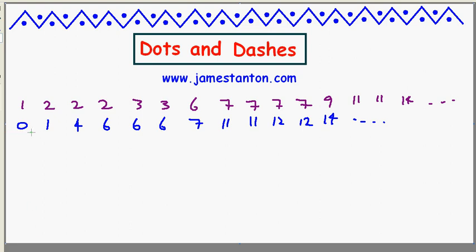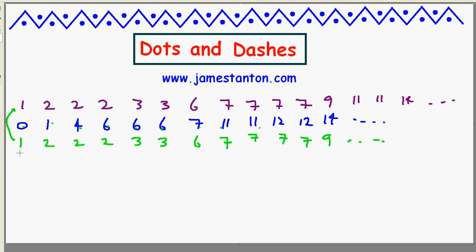Now comes something fun. Let's take the frequency sequence of the frequency sequence. How many entries in blue are smaller than 1? Just the first one. How many entries are smaller than 2? The first 2. How many are smaller than 3? The first 2. How many are smaller than 4? The first 2. How many are smaller than 5? The first 3. How many are smaller than 6? Still the first 3. How many are smaller than 7? Up to six entries are smaller than seven. How many entries are smaller than eight? The first seven entries are smaller than eight. How many are smaller than nine, ten, eleven? Still the first seven. How many smaller than 12? Up to nine entries smaller than 12 — that's nine entries smaller than 12, and so on. And look: the frequency sequence of the frequency sequence seems to be back to the original sequence. That's our first mysterious property.